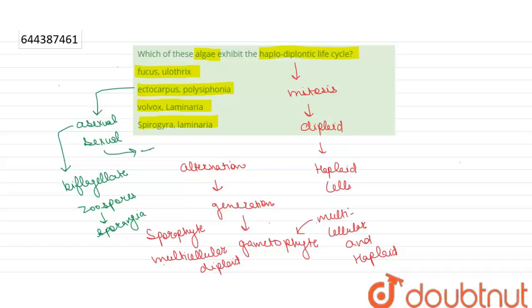So the life cycle of Ectocarpus is haplodiplontic.